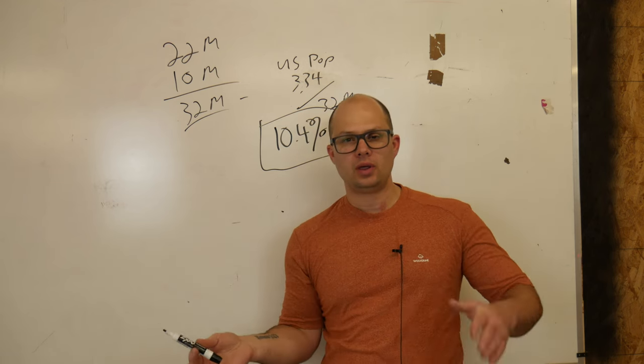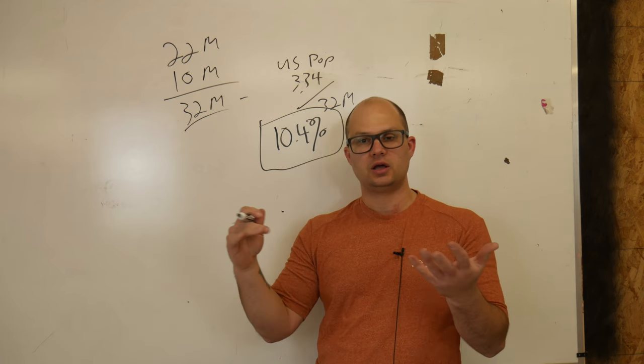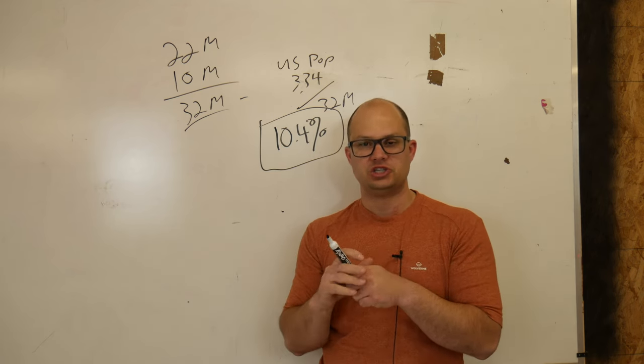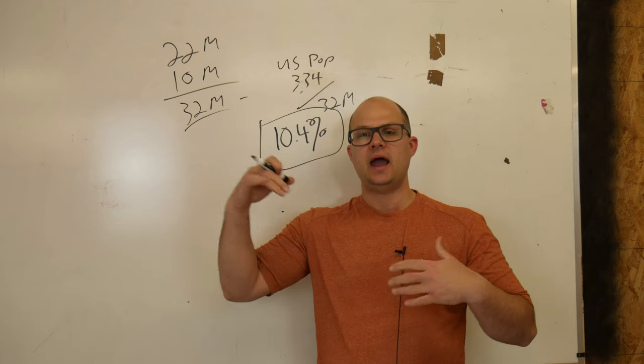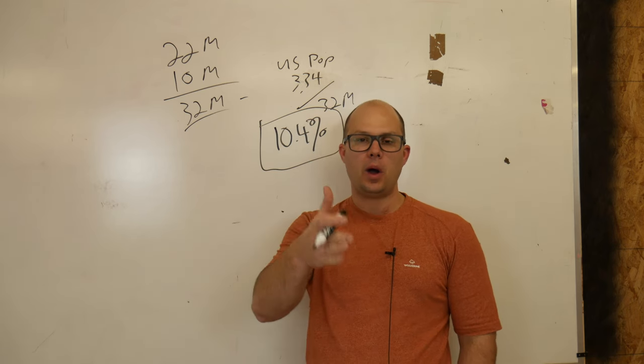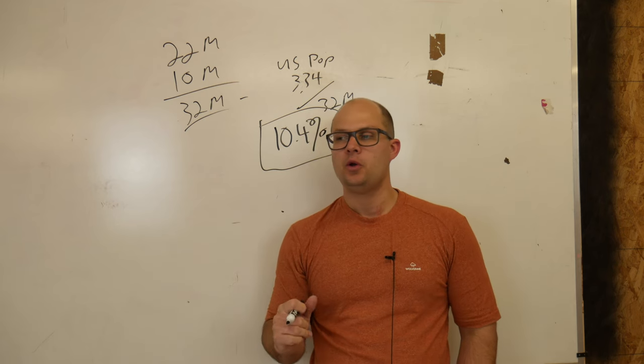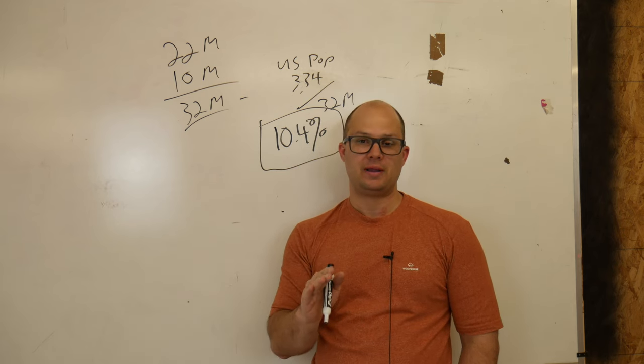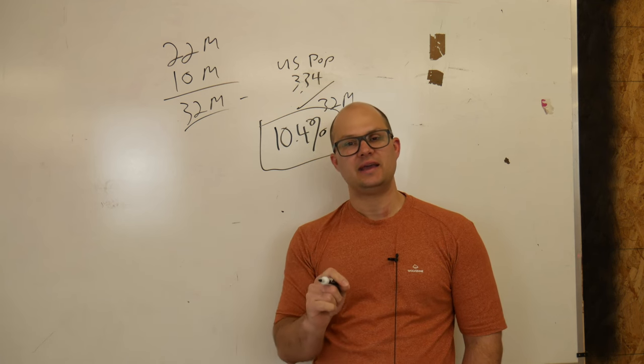Now, you might say, well, that's not so bad. That means nine people work a private sector job, and they pay taxes, and the businesses pay taxes in, and then that supports the one. So out of every 10 people, one person, the other nine pay for the one. Well, one, that would still be pretty bad, honestly. That would be catastrophically bad, but unfortunately, it gets worse.